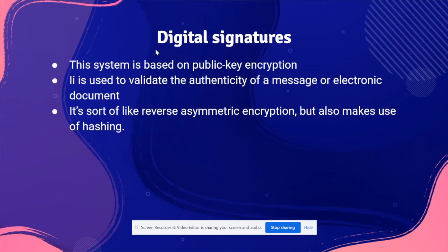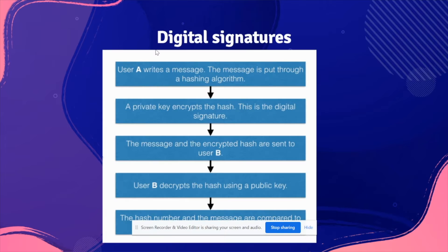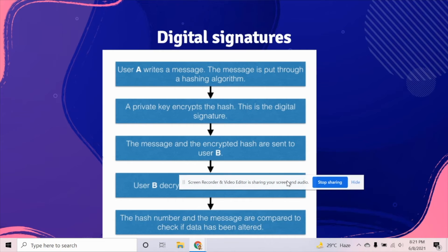Here's an example of a digital signature: a message is put through a hashing algorithm, then a private key is used to encrypt the hash — this encrypted hash is the digital signature. The message and the encrypted hash are sent to User B. User B decrypts the hash using the public key, and the hash and the message are compared to check if the data has been altered.